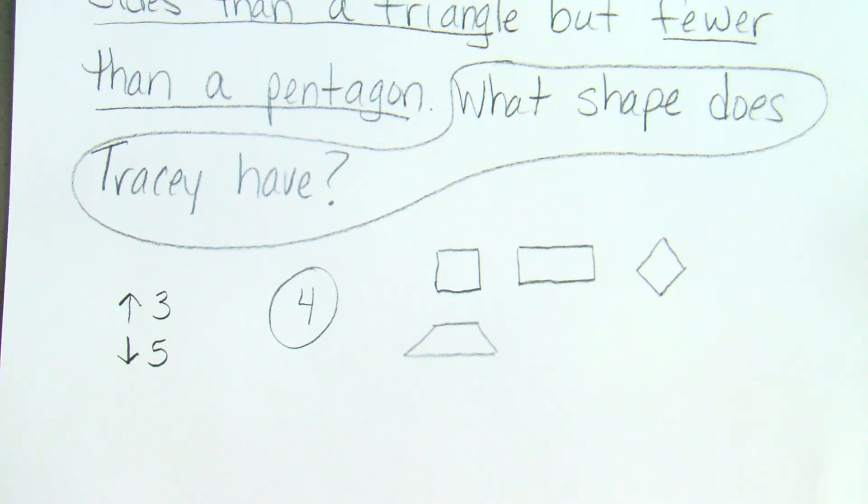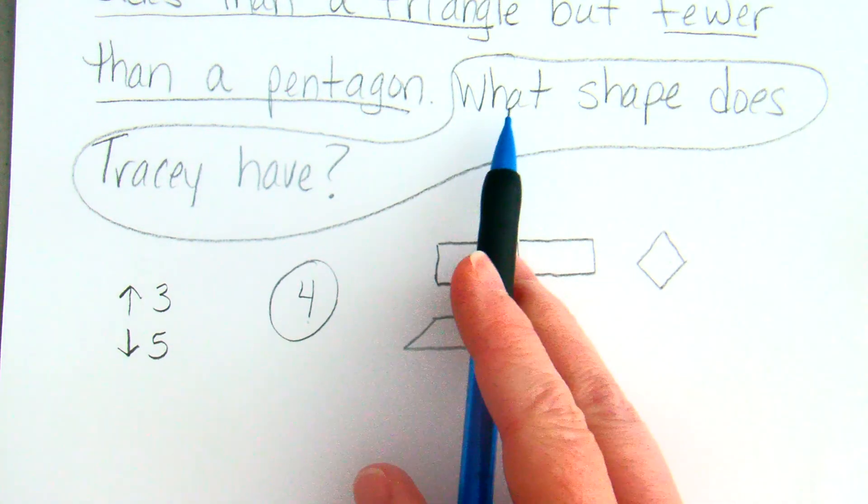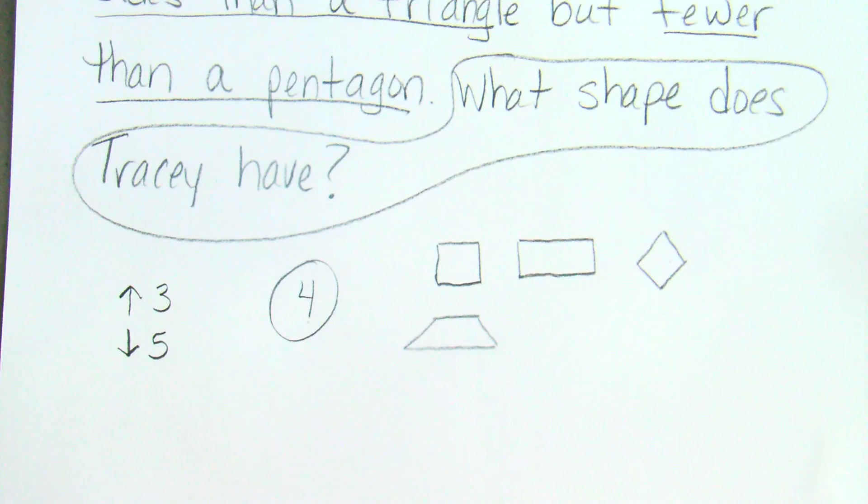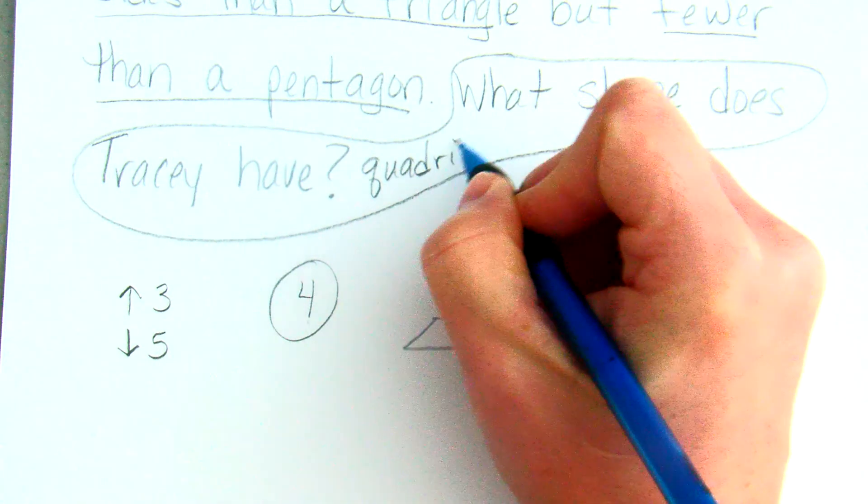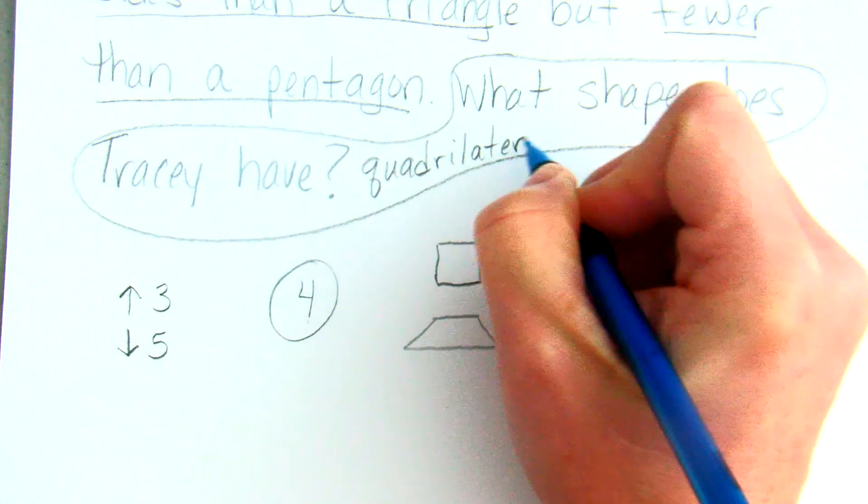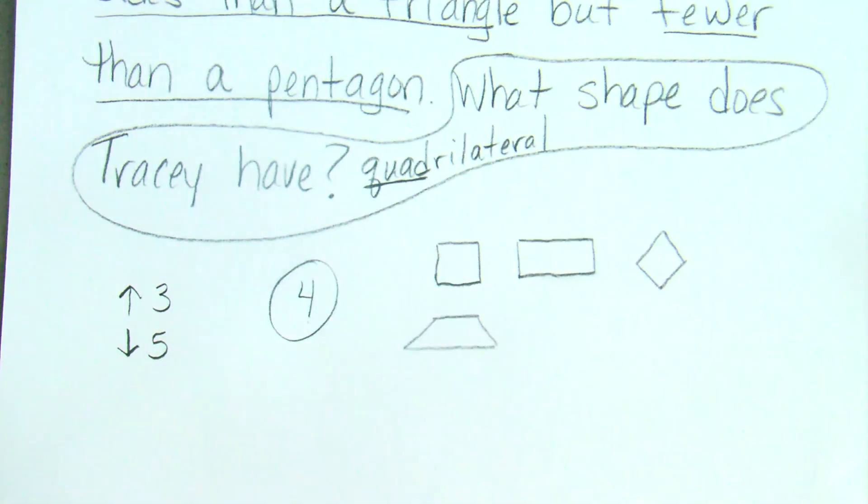So if I answer what shape does Tracy have, there are a lot of different shapes that it could be. So in this case, this one doesn't have just one answer. I know it has four sides, but being able to identify the exact shape, it could have a multiple number of answers here. So if I answer what shape does Tracy have, all I can say is a quadrilateral. A quadrilateral, remember quad means four, means a four-sided figure.